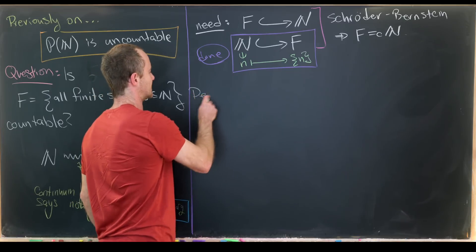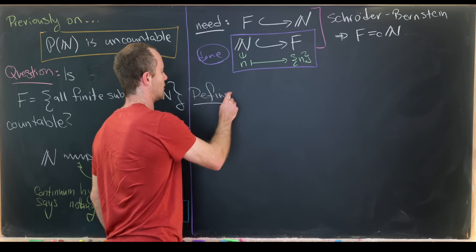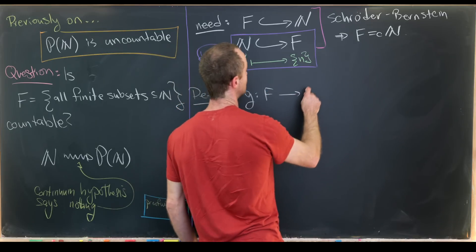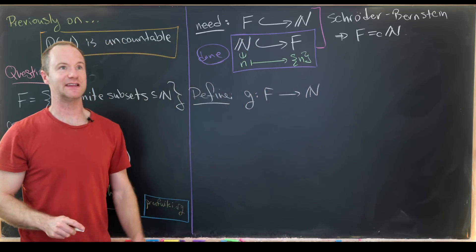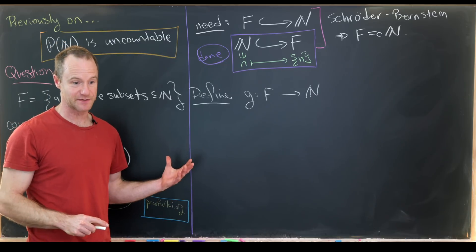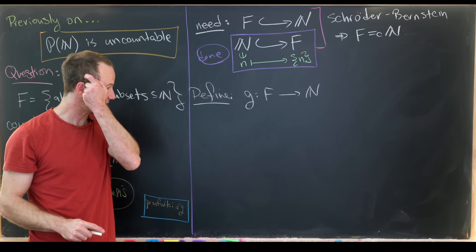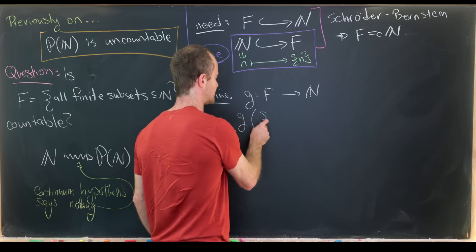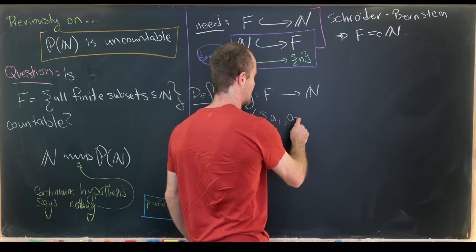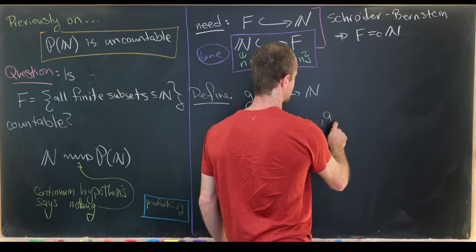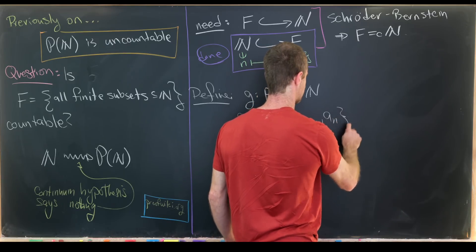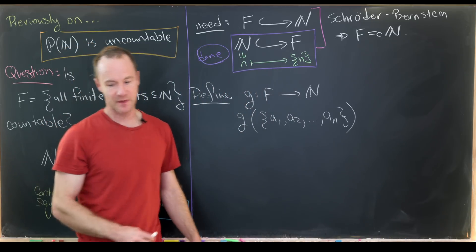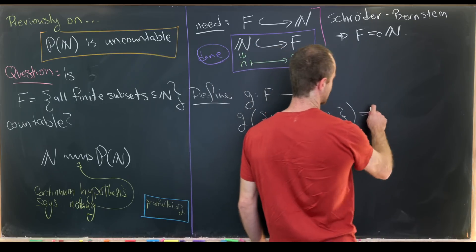Let's define the following function G, which goes from F to the natural numbers. We need an input that's a subset and an output that's a well-defined natural number. So let's take the subset {A1, A2, ..., A_N}. That's most definitely a finite subset of natural numbers.